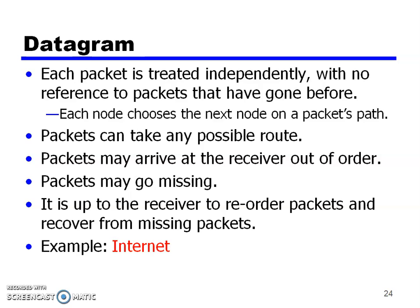The first type is datagram switching. In datagram switching, the original message is divided into a number of small packets. Each packet may travel a different route from source to destination — all packets may take different paths. Each packet is treated independently with no reference to packets that have gone before. A packet can take any possible route, packets may arrive at the receiver out of order, and packets may go missing. It is up to the receiver to reorder packets and recover from missing ones. An example of datagram switching is the internet.